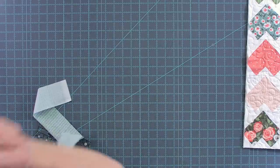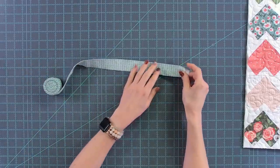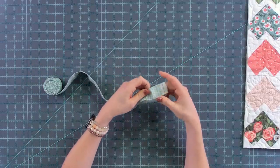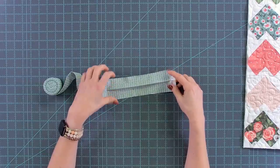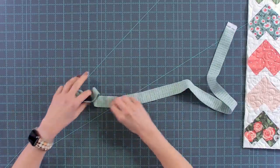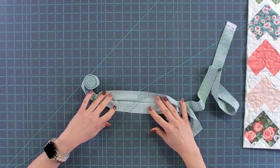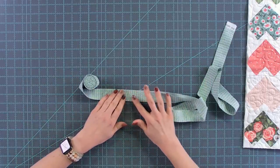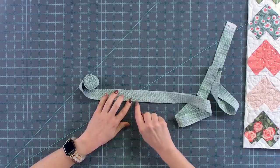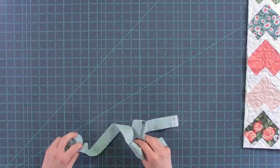So I'm going to clear that away and here I have my long continuous binding folded in half wrong sides together and pressed. I'm going to pull it out a little ways and show you that seam. So you can see I've pressed the seam open so now it lies pretty flat. If the seam was straight up and down it would be really bulky just in that section. So now we're ready to get started.